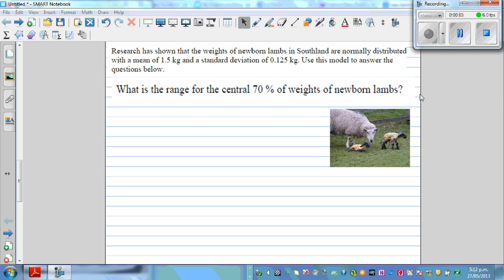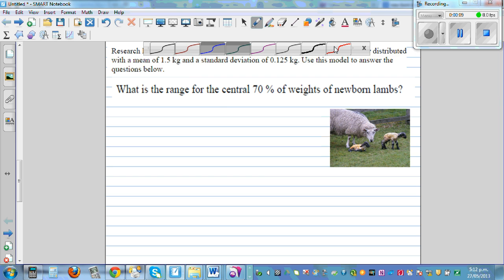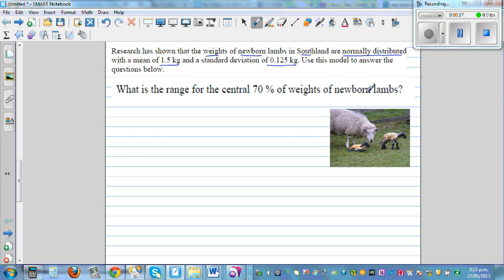Now this is an inverse normal problem. Let's read the question. Research has shown that the weights of newborn lambs in Southland are normally distributed with a mean of 1.5 kg and a standard deviation of 0.125 kg. Use this model to answer the question below.